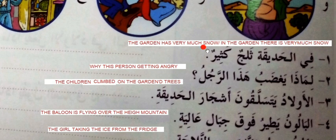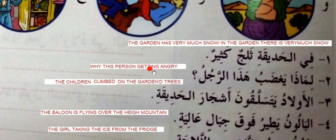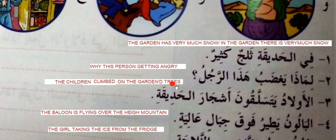Limaza yagzabu — why is this man angry? They are using ya- as I told you — ya- is for the masculine noun and ta- for the feminine noun. So yagzabu hadha al-rajul — why is this person getting angry? Yes — yatasallaquna ashjar al-hadiqa — the children are climbing the trees of the garden.